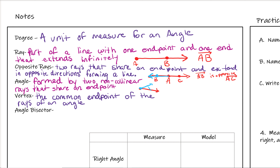The last definition in this set is an angle bisector. We mentioned bisectors with segments — a segment bisector cuts a segment in half through its midpoint. An angle bisector is the same idea: it cuts an angle into two congruent angles. If something is an angle bisector, it cuts the big angle in half and the two smaller angles will be equal.